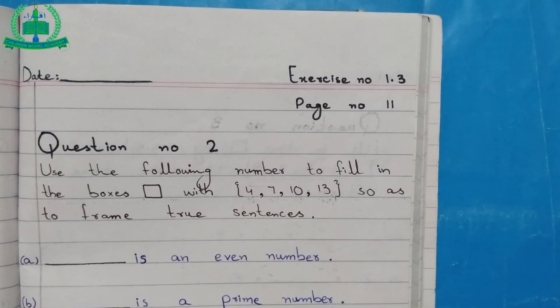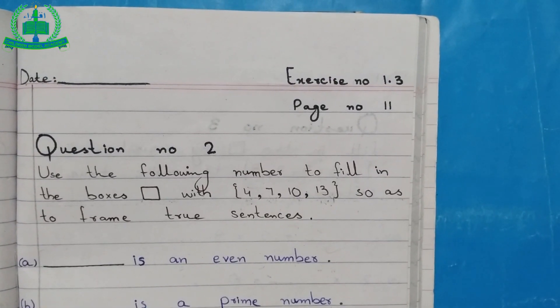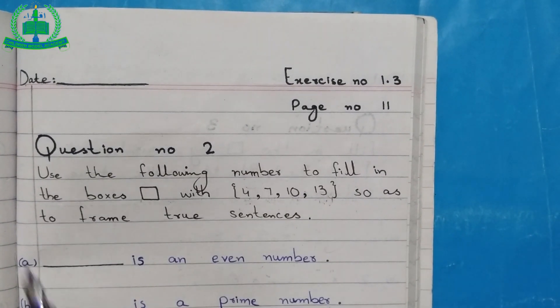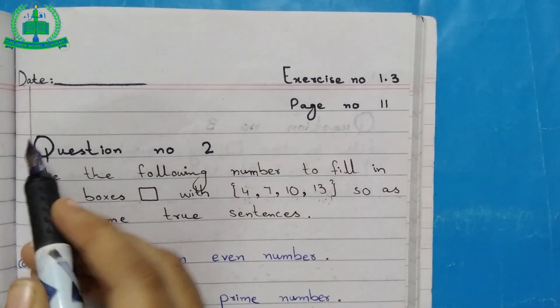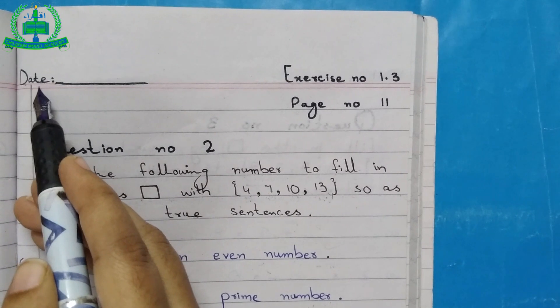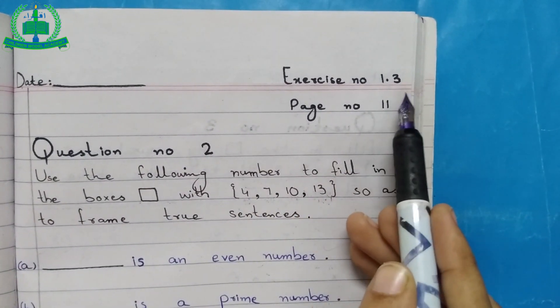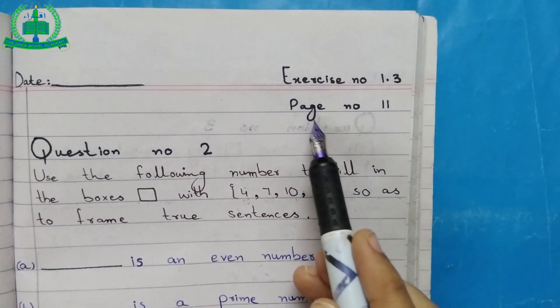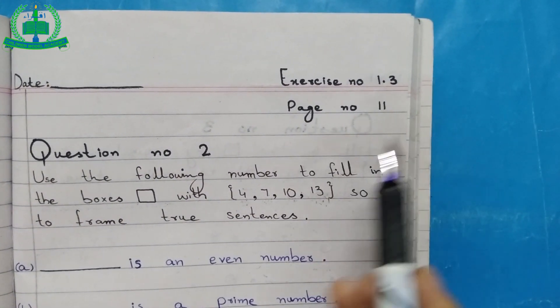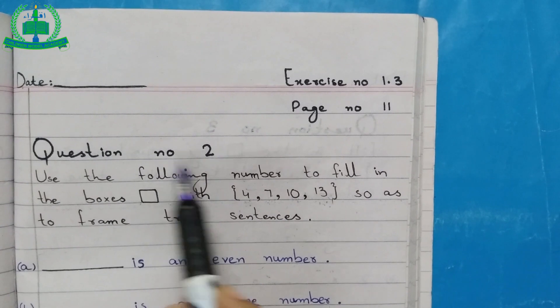Now open your math exercise copy. Draw a margin line and mention the date. Exercise number 1.3, page number 11, question number 2.